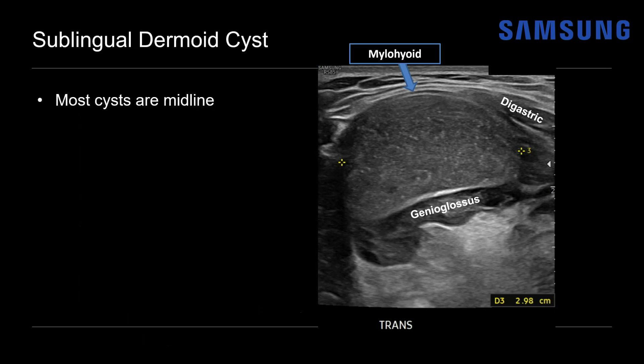Sublingual dermoid cysts are often midline; this one is atypical in its left perimedian location. This brings us to the differential diagnosis, which includes suprahyoid thyroglossal duct cysts — also typically midline — while infrahyoid thyroglossal duct cysts may be perimedline. Sometimes thyroglossal duct cysts can be irregularly shaped and multilocular, unlike dermoid cysts, which tend to be ovoid, rounded, and unilocular, though they can have an overlapping appearance.